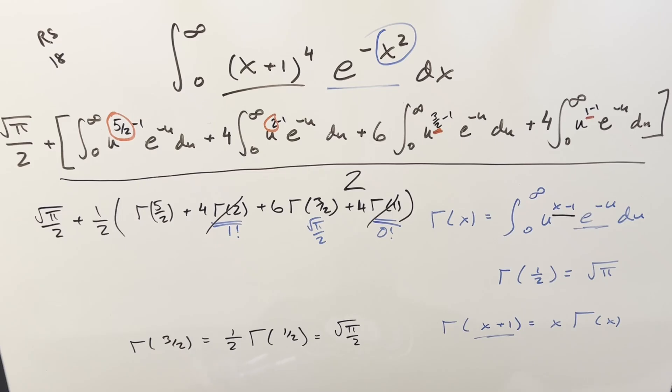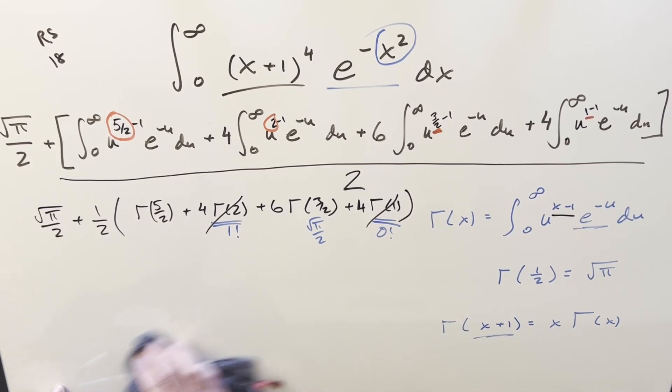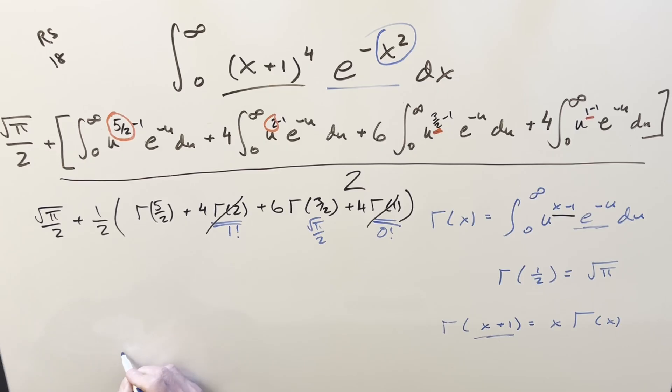Next, what about gamma(5/2)? Well, we'll use the same exact formula for that, reducing it. When we do that, let's see. So we have gamma(5/2) reduced with this is going to be 3/2 times gamma(3/2).